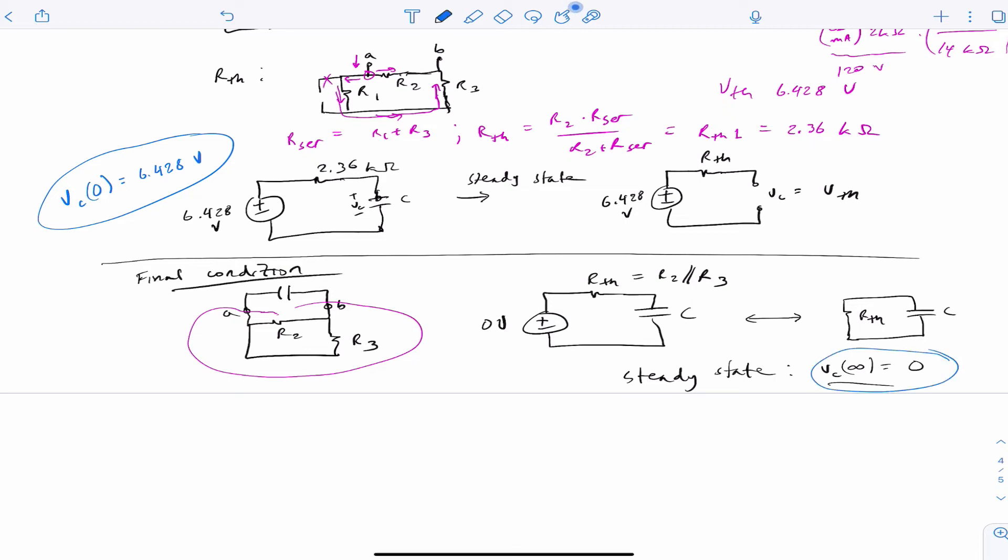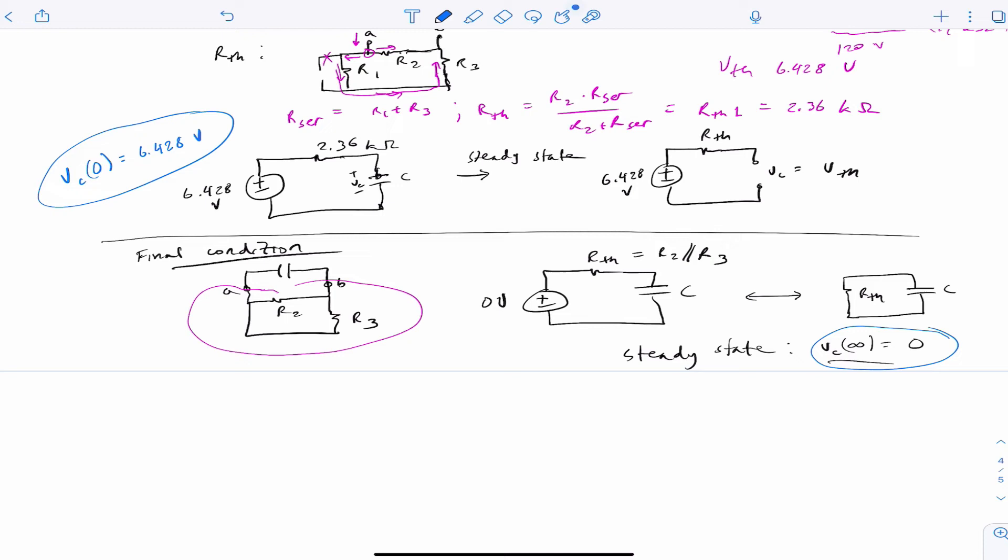So we know how our voltage plot is going to look. 6.428 volts. And then at 5 time constants, we have an exponential decay down to zero. The final condition determines that value, and then the initial condition determines this value. Now we need to figure out what the time scale is.